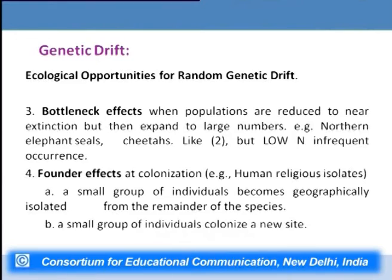The third type is the bottleneck effect — when populations are reduced to near extinction but then expand to large numbers. When this happens, whatever alleles the surviving individuals harbored are transferred to the future population. Examples include the northern elephant seal and cheetah.